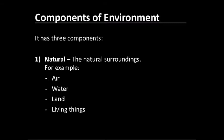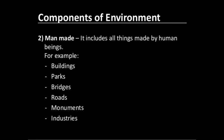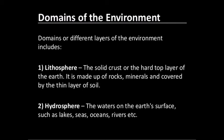Now we discuss the natural environment. In the natural environment, we have air, water, land and all living organisms. If we talk about land, it is denoted as the lithosphere. In other words, we talk about the domains of the environment. The different layers of environment include lithosphere, hydrosphere, atmosphere and biosphere.